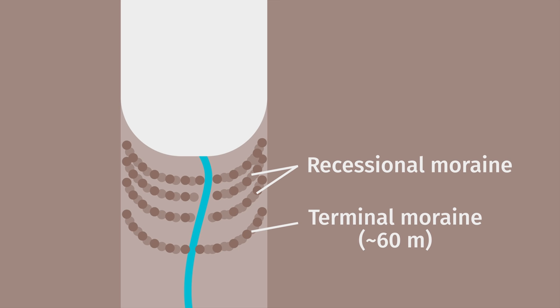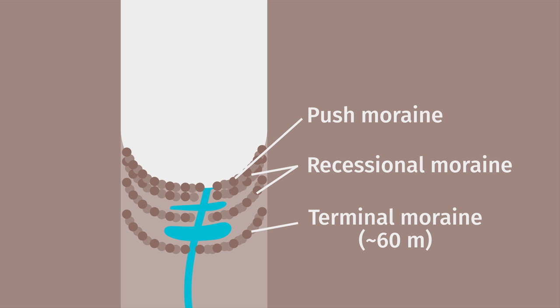The longer the halt, the more material builds up, and the higher and larger the newer end moraine will be. Expect lakes to get impounded here. Anytime the glacier briefly advanced, it would have bulldozed a bunch of material at its snout, forming push moraines, which could make the landscape look like a roughly ploughed field, or just increase the size of a recessional moraine.